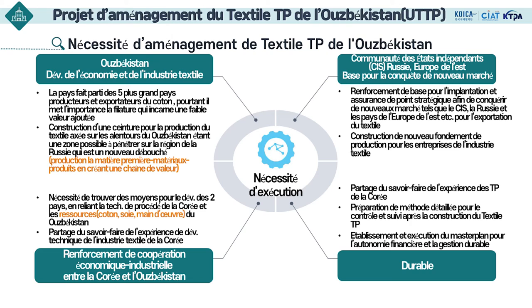Ceci montre donc la nécessité de l'aménagement du textile technoparc en Ouzbékistan. Le premier objectif de l'industrie textile ouzbèke est le développement économique du pays. L'Ouzbékistan est en effet l'un des cinq plus grands producteurs de coton du monde. Bien qu'elle soit un pays exportateur, elle s'est jusqu'à présent concentrée sur la filature qui incarne une faible valeur ajoutée. Il y a donc une tendance à convertir cette industrie en une industrie à valeur ajoutée plus élevée, en établissant une ceinture de production textile centrée sur l'Ouzbékistan.